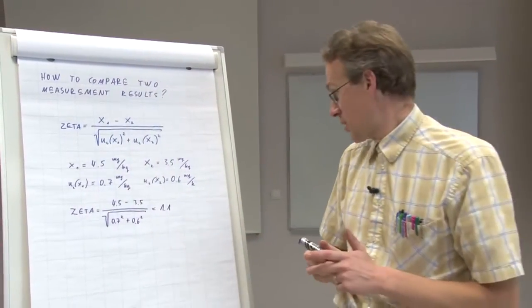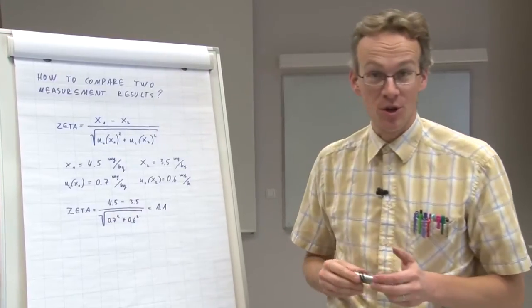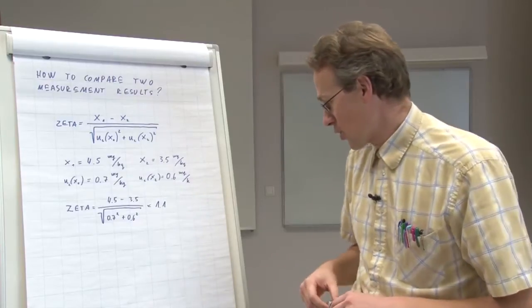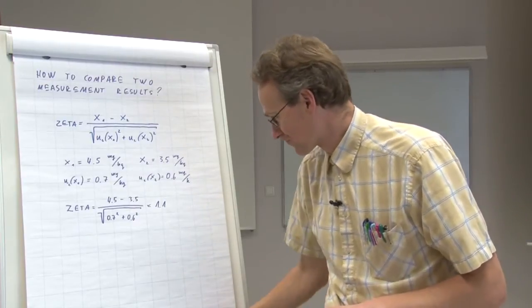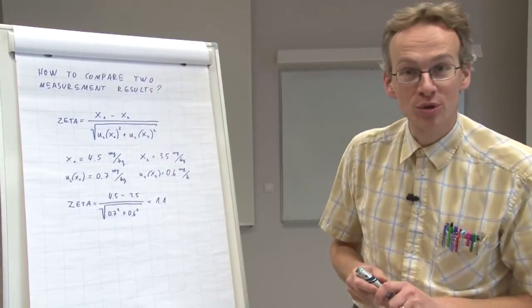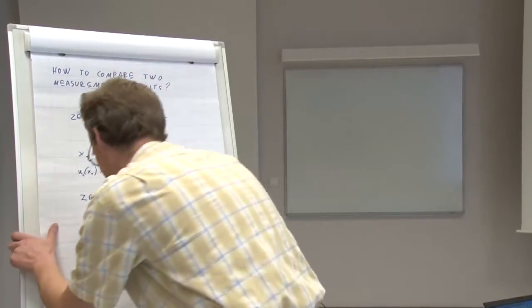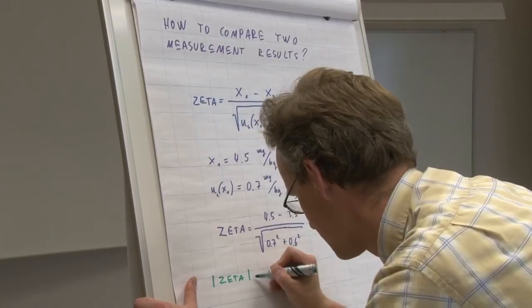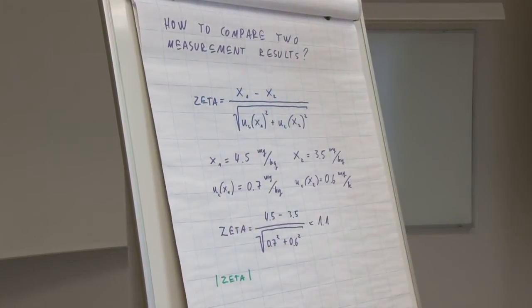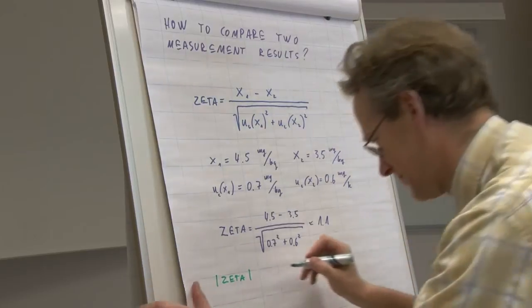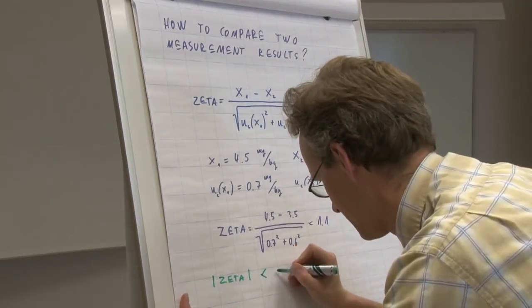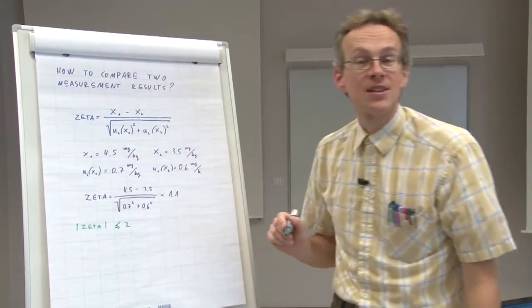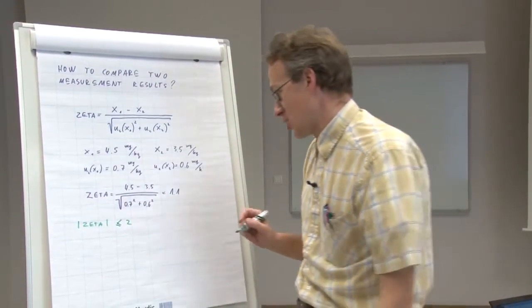How do we know now whether these results are in agreement or not? The zeta scores are evaluated according to the following rules. If the absolute value of zeta is below 2 or equal to 2, then we can say that the results are in agreement.